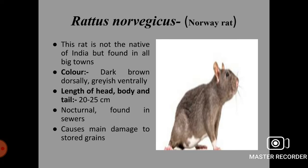Next rodent species is Rattus norvegicus, the Norway rat. This rat is not native to India but is found in all big towns. Color is dark brown dorsally and grayish ventrally. Length of head, body and tail is 20 to 25 cm. This species is nocturnal and found in sewers. The main damage caused by this species is to stored grains.